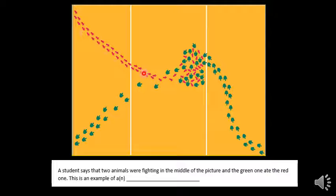There's some red tracks coming down and they're also circling around in the middle. And then they don't really go off the page anymore.